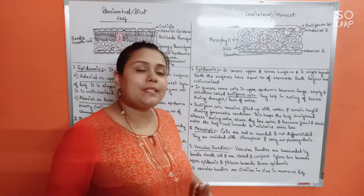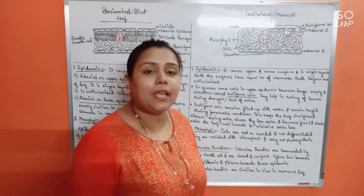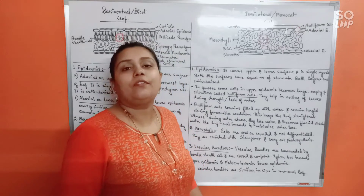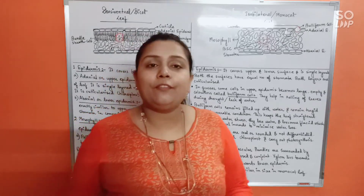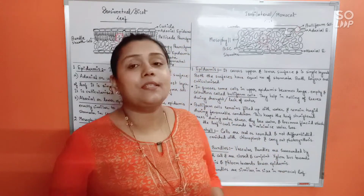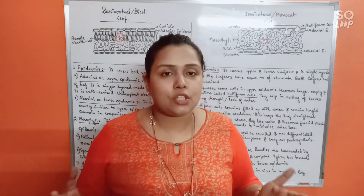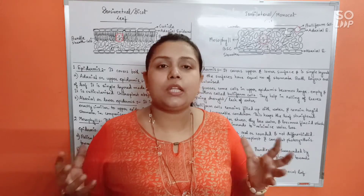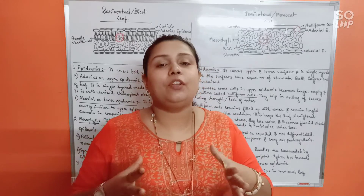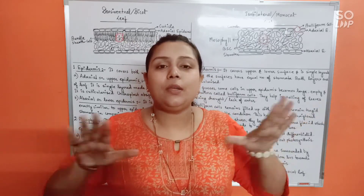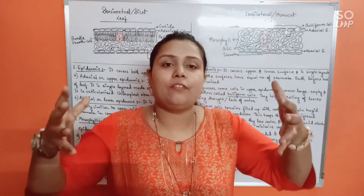How do buliform cells help the plant survive water stress conditions? Buliform cells are large cells that mostly absorb water when sufficient water is present in the surrounding. They remain turgid — exerting pressure outward — just like a balloon inflated with water, where the water pressurizes the outer walls keeping it swollen.